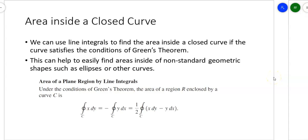This is kind of a neat application of Green's Theorem, in that you can find area inside a closed curve using the conditions of Green's Theorem. That allows us to find areas inside things like ellipses. You know how to find the area inside of a circle, π r squared. How do you find an area inside of an ellipse? It turns out there is a geometric formula for it. How do we come up with that geometric formula? Take a look at this area of a plane region by line integrals.